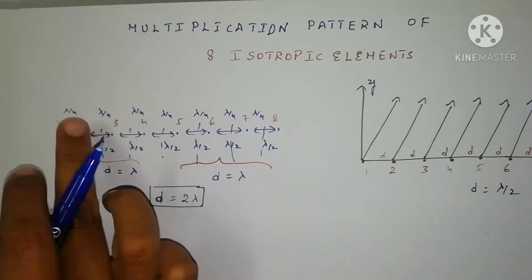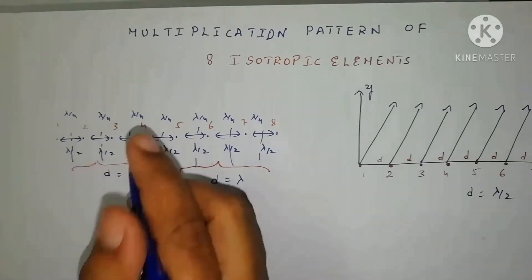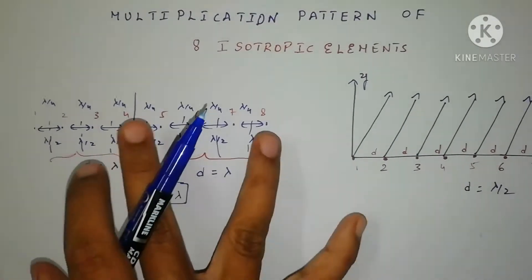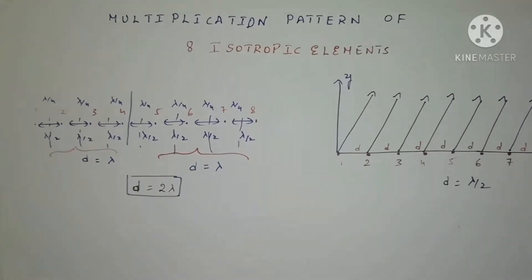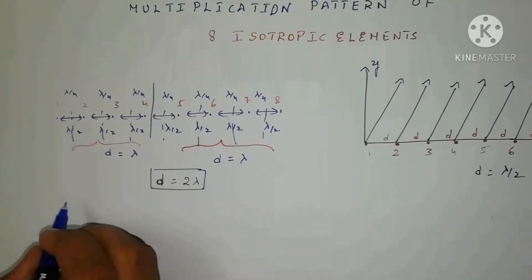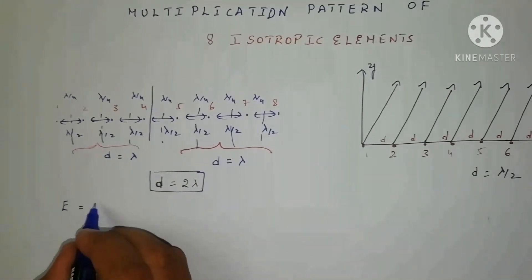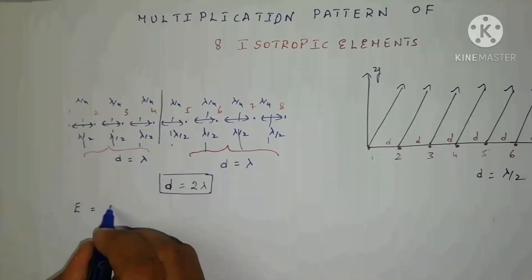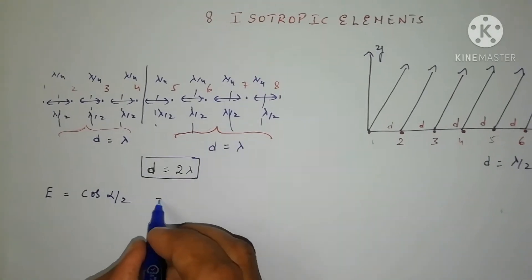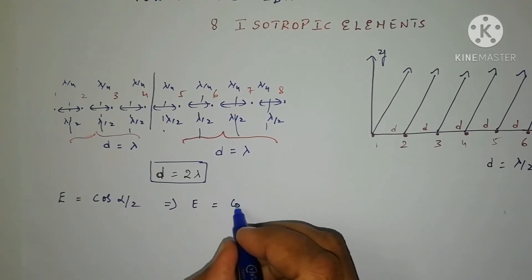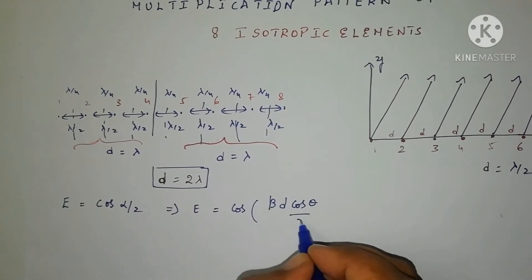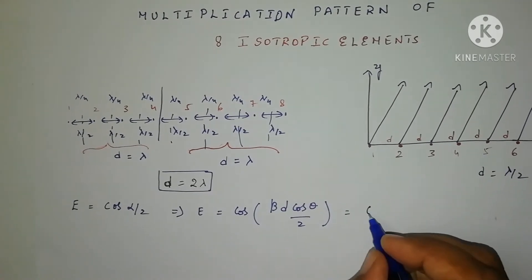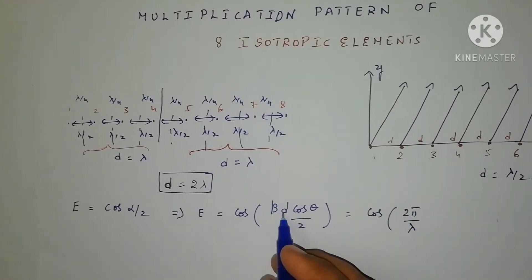Or in a simple way, just consider the first section as one part and the rest as another part, so this part gives lambda and the other part gives lambda, making lambda plus lambda equal to 2 lambda. Now for calculation of the group pattern, the same formula applies: E is equal to E-naught cos(alpha by 2). With 2E-naught reduced to 1, E is taken as unit magnitude and directly becomes cos(alpha by 2). So we get E equal to cos of (beta D cos theta divided by 2). The value of beta is 2 pi by lambda.